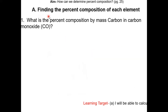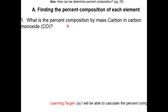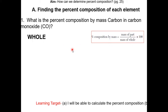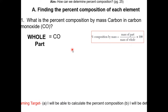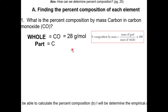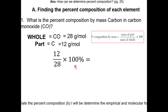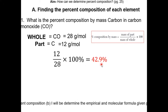In the first scenario, we'll be finding the percent composition of each element. Question 1: what is the percent composition by mass of carbon in carbon monoxide? The first step is to look up the percent composition equation on Table T. The whole will be CO, and the part will be carbon. We figure out the GFM of CO and C. CO is 28 grams per mole, and C is 12 grams per mole. We plug into the equation: 12 over 28 times 100% is 42.9%. That is the percent composition of carbon in CO.